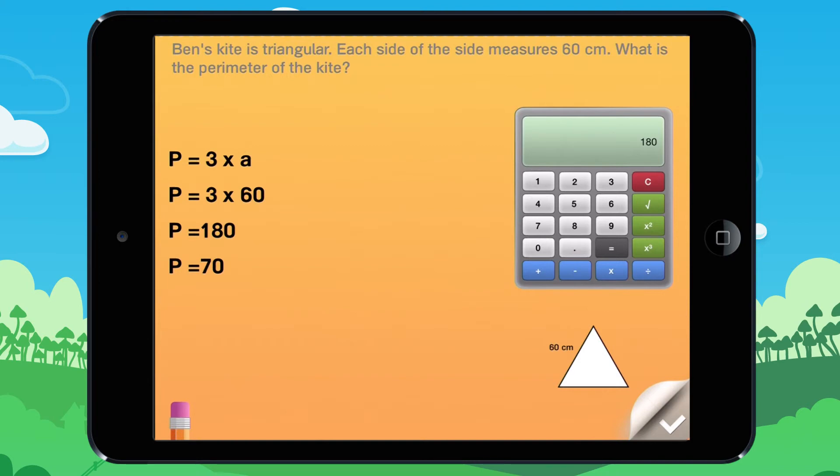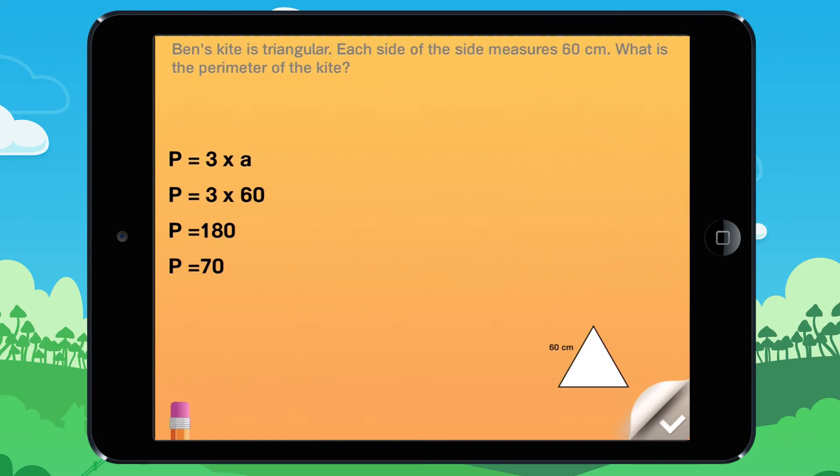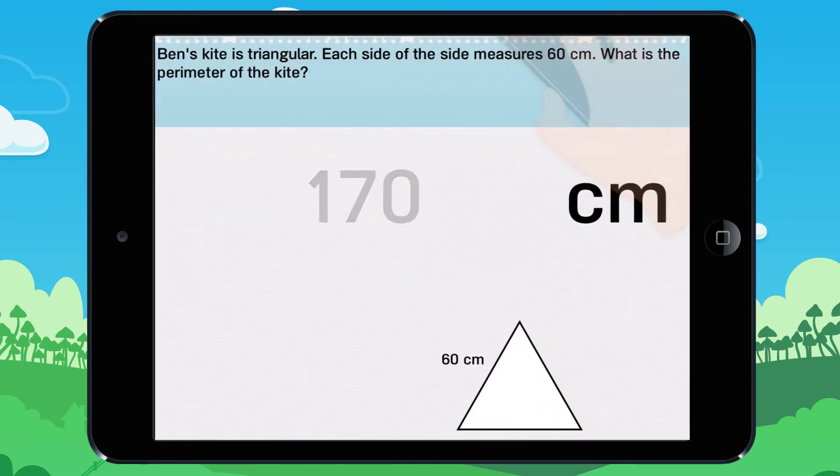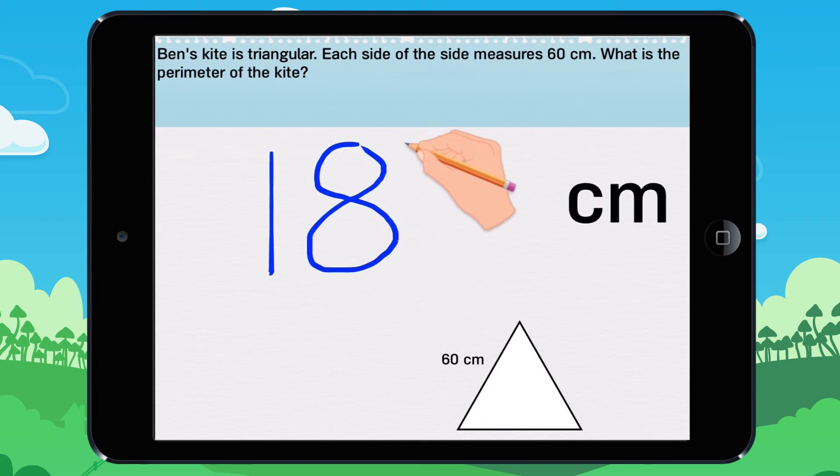P equals 180. The kite has a perimeter of 180 cm.